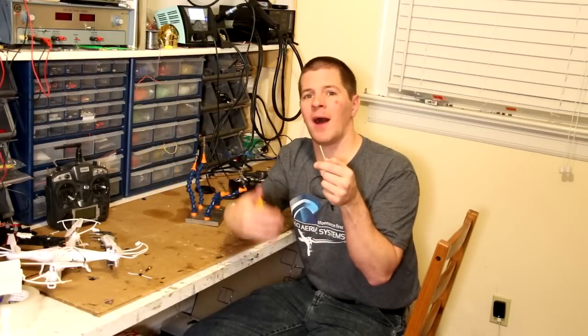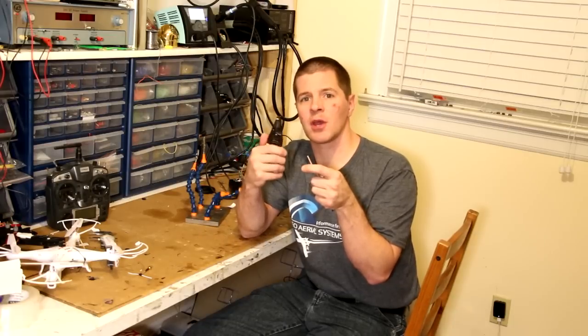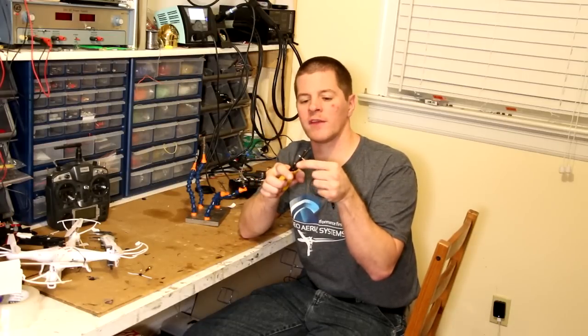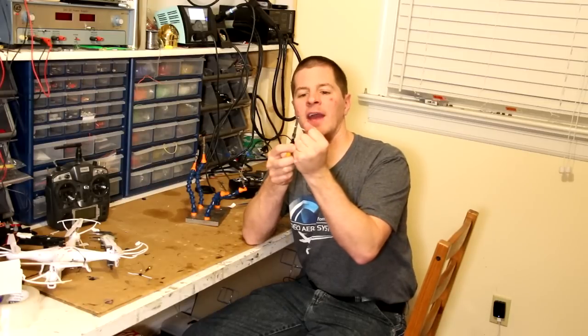For RG316 cable I find a pair of wire strippers with a 14-16 gauge wire stripper works great to remove the outer jacket. You're going to want to remove about half an inch of the outer jacket and expose it up.